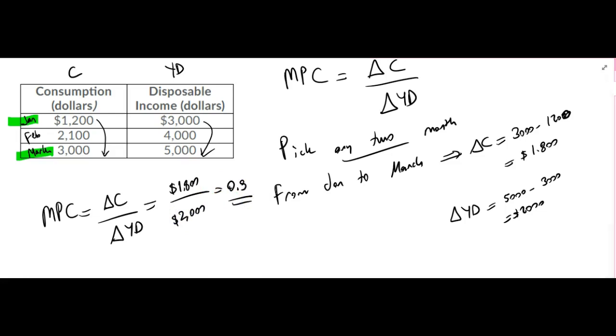What does it mean? That is saying that for each additional dollar in my disposable income, $0.90 will go to my consumption, which means the remaining will go to my savings.